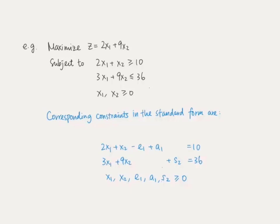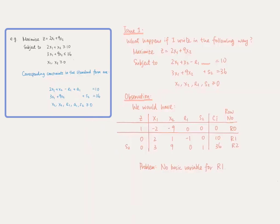Referring to the first constraint 2x1 plus x2 greater than or equal to 10, it seems that if we subtract a non-negative surplus variable from the left-hand side without adding the artificial variable, it's enough to transform the constraint to an equation. Why is it necessary to add an artificial variable? We now give the explanation.